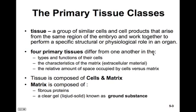The four primary tissues differ from one another in the types and functions of their cells, the characteristics of the matrix — the extracellular material — and the relative amount of space occupied by cells versus matrix. All tissue is composed of cells and matrix. The matrix is composed of fibrous proteins and a clear gel ranging from liquid to solid, known as ground substance.